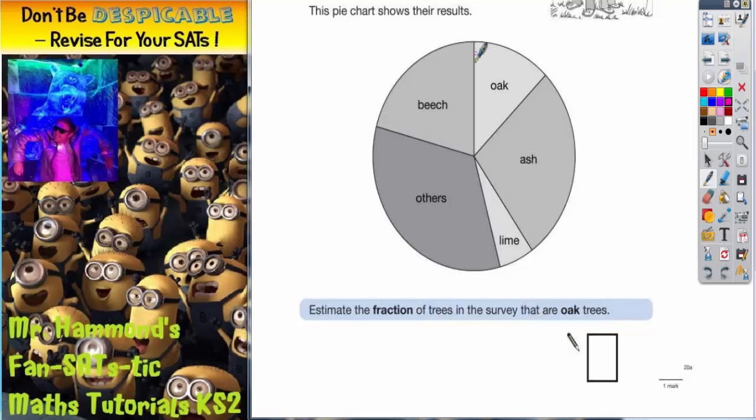Well let's see what happens if we try and split the pie chart in half. Well obviously oak is much less than a half so that's not going to work. If we split it into quarters it's still much less than a quarter.